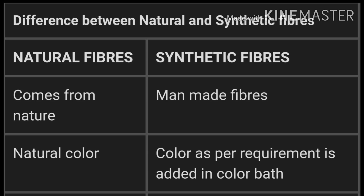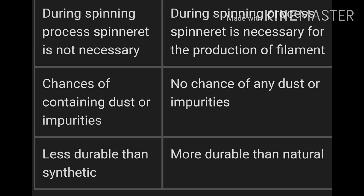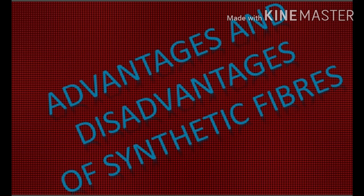Now let us understand the difference between natural and synthetic fiber. Natural fibers come from natural sources, while synthetic fibers are made by humans using chemicals. Natural fibers have natural color, but synthetic fibers are dyed in different colors. A spinneret is used to make synthetic fiber, and there may be dust or some impurities in natural fiber.